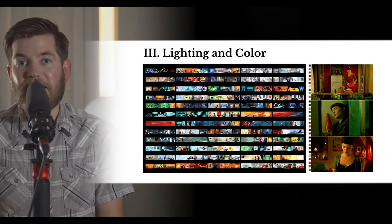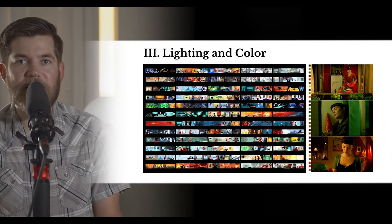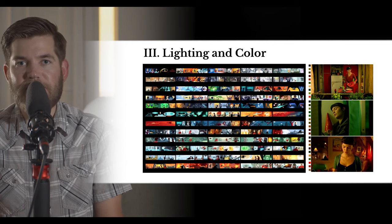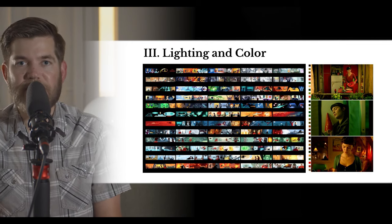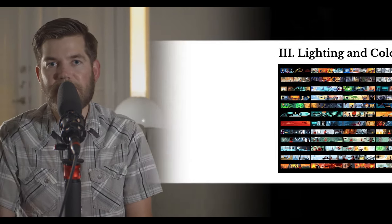Light falls into mise-en-scene because lighting affects the image within the frame — what we see on stage in a film is affected by lighting. So our next category of filmmaking vocabulary is lighting and color. If you already started the mise-en-scene vocabulary, you'll find it in the mise-en-scene vocabulary document.